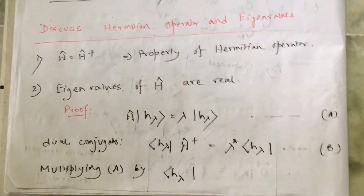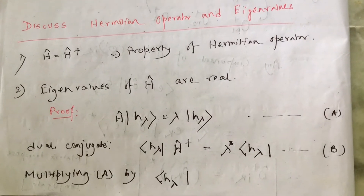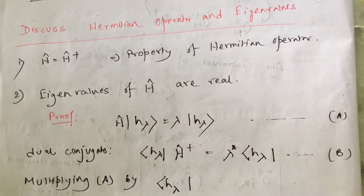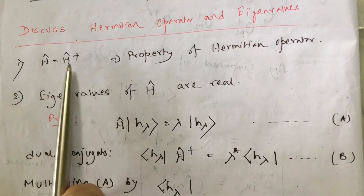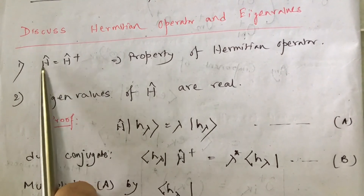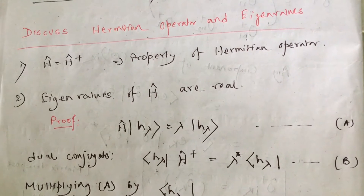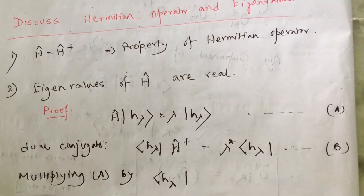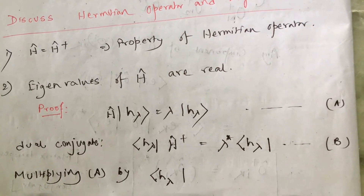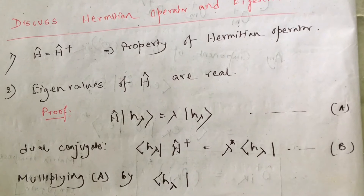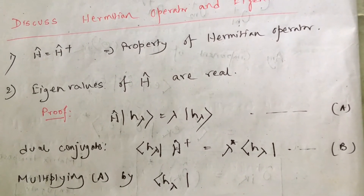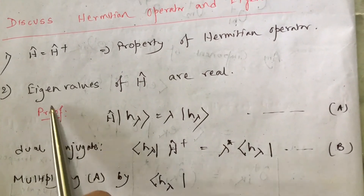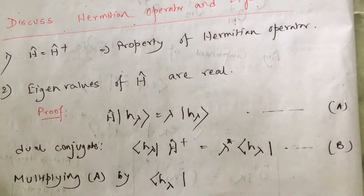Now let's discuss Hermitian operators and their properties. The first property is that after taking the Hermitian conjugate, the operator remains the same: O† = O. The second, very important property is that eigenvalues of Hermitian operators are real. Since position and momentum cannot be imaginary, the position operator and momentum operator give only real values, so those are Hermitian operators. Let's prove that eigenvalues of Hermitian operators are real.